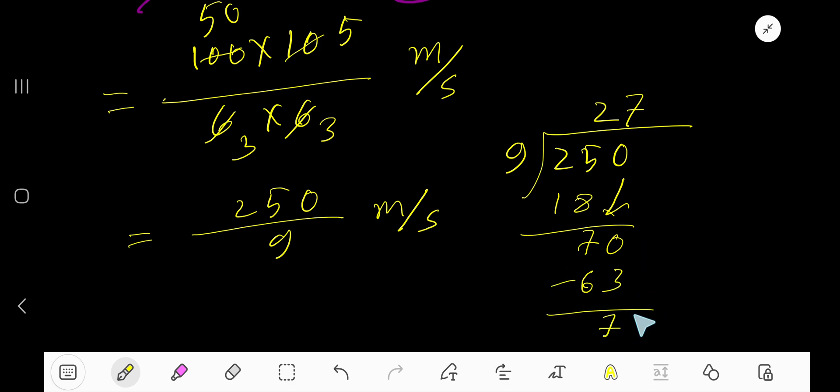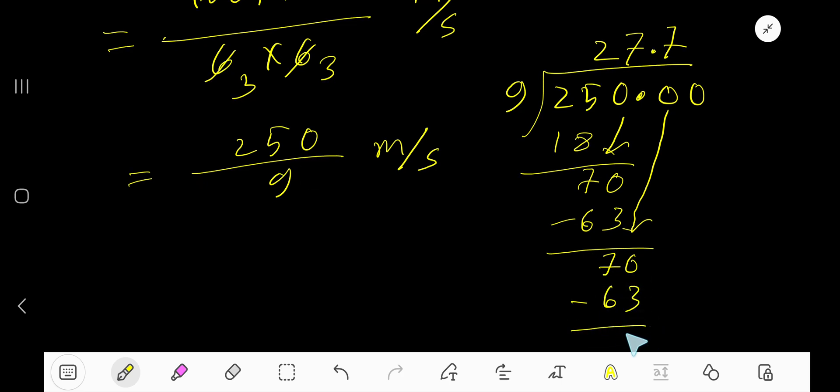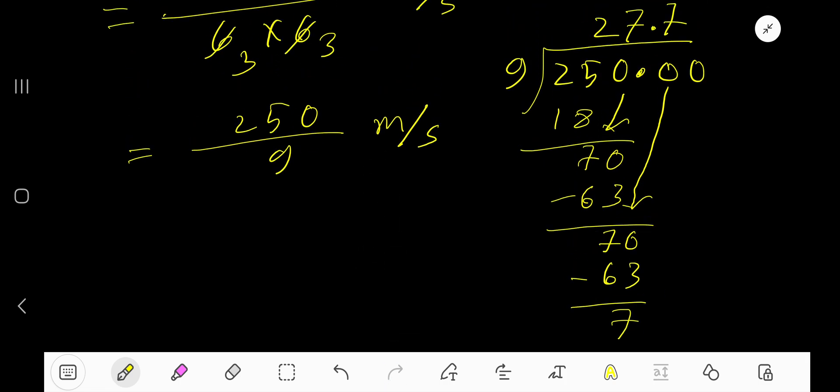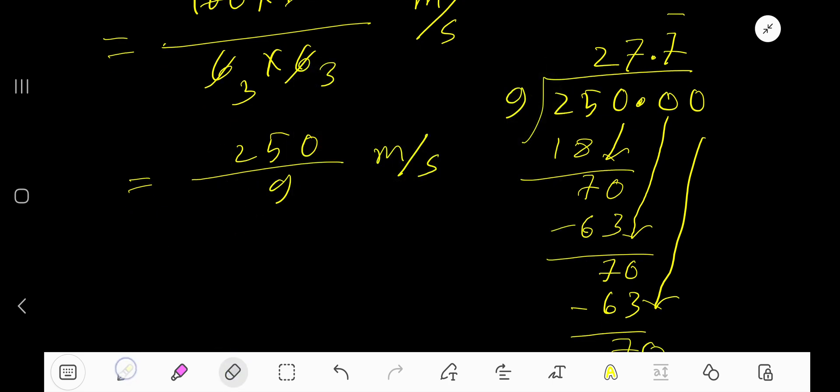7 times 9... So again take a decimal and add 0. Bring down the 0. Again 9. Before the 0 there's a decimal, the same must come here. 9 goes into 70 how many times? Again 7 times. 7 times 9 is 63. Subtract, again 7. So you can bring down the next zero, that is 70. So again 7. So this 7 is repeating, you can place a bar. Our answer is 27.7 bar meters per second.